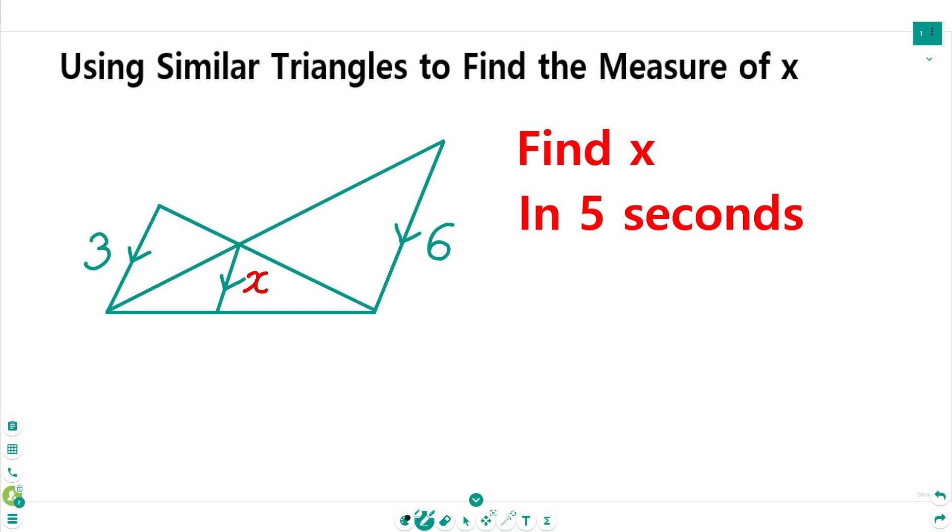This video will cover how to find the measure of x using similar triangles. x equals 3 times 6 over 3 plus 6 equals 18 over 9 which is 2.